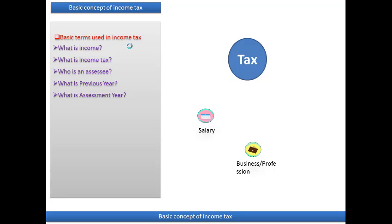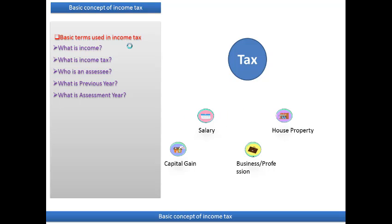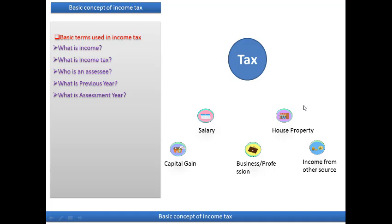Tax is the amount which is calculated on the total income of these heads — such as salary, business and professions, capital gain, house property, and income from other sources. The tax calculated on these five heads has to be paid to the government.